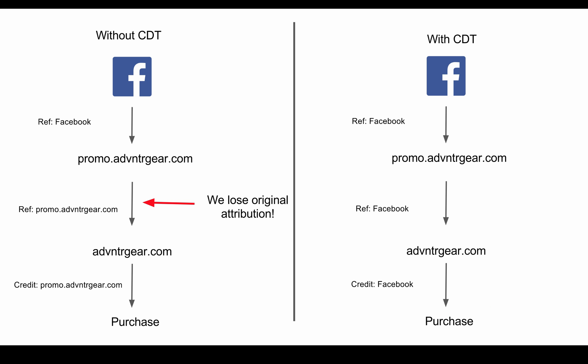On the left we have a couple of websites set up without cross-domain tracking. The domains we're using are promo.adventuregear.com and adventuregear.com — those are two separate domains. The promo. is what's called a subdomain, but for all intents and purposes within Google Analytics, it's a different domain. So let's see an example of what would happen.